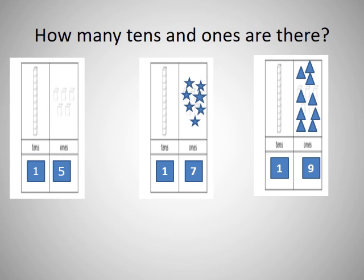In the third picture you can see. How many tens? One ten. And count the ones: one, two, three, four, five, six, seven, eight, nine. It is nine ones. So, the answer is nineteen.